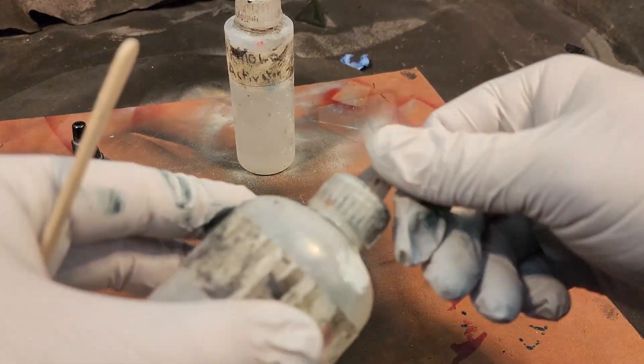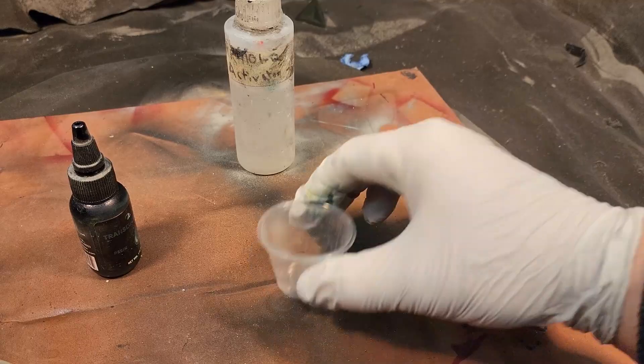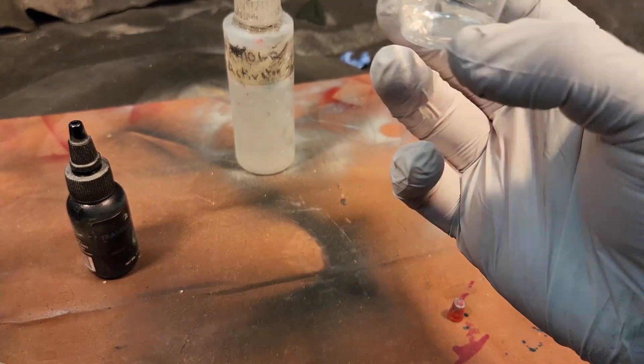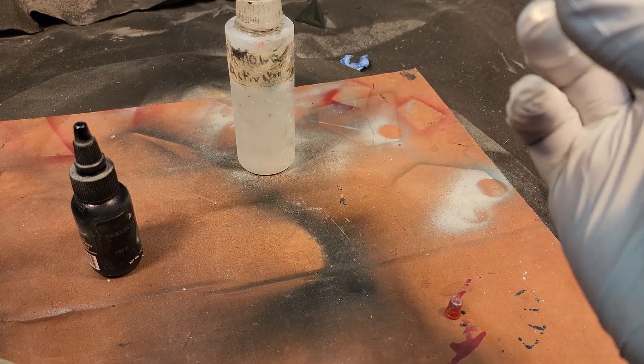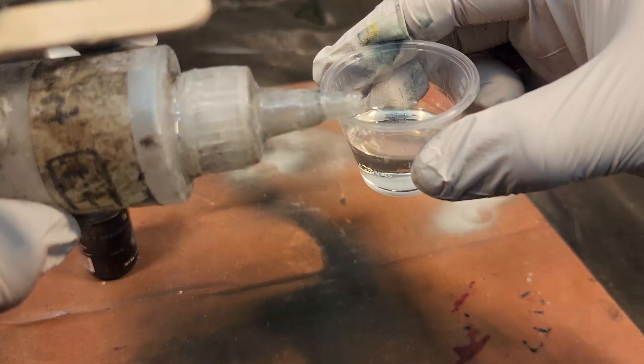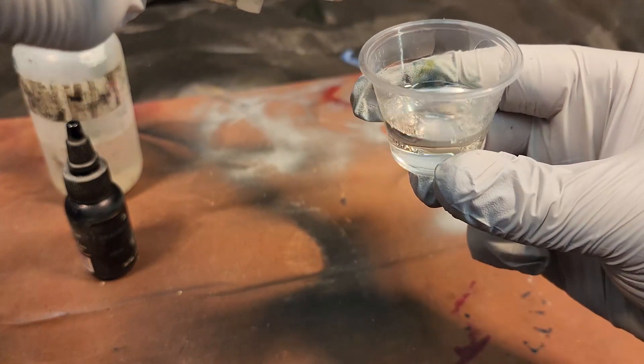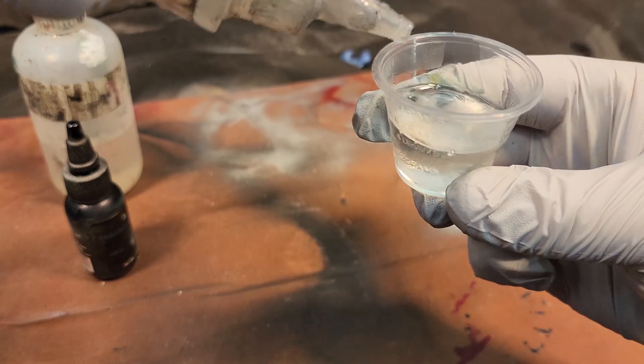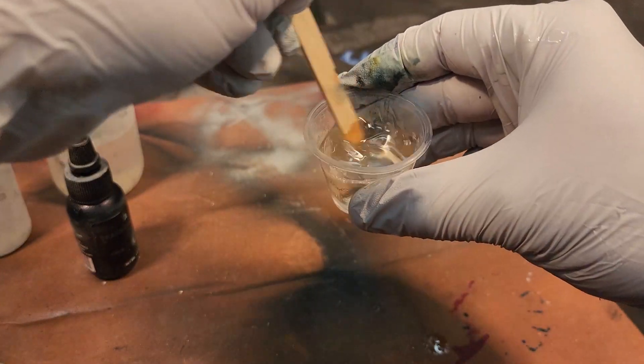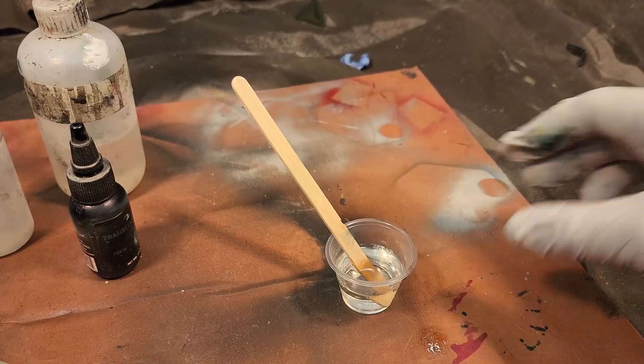All I'm going to do is measure out my paint. This paint is a 4 to 1 ratio, so for every 4 parts of paint that I put in, I need to put in one part of the activator. I'm going to go ahead and measure that out. Oh, that's pretty good. It doesn't have to be super precise.